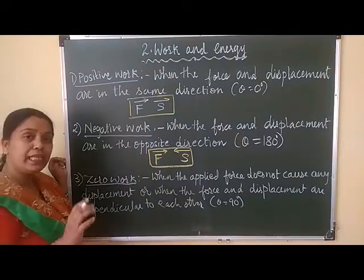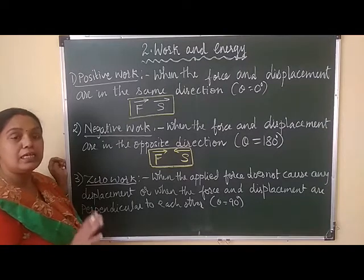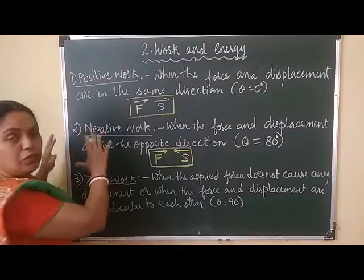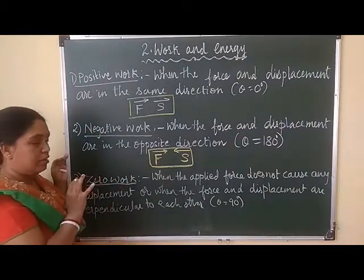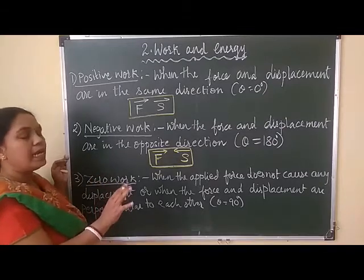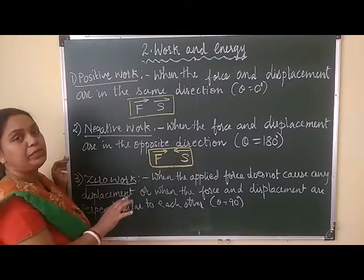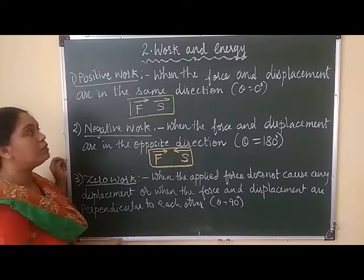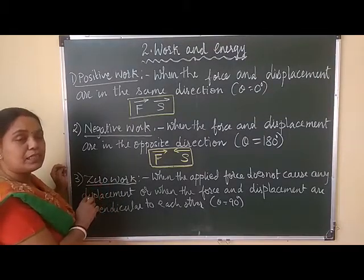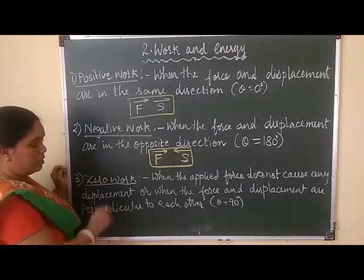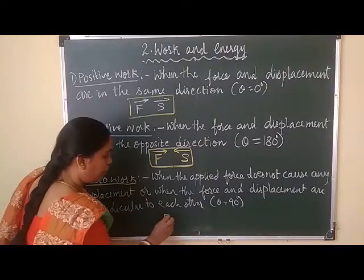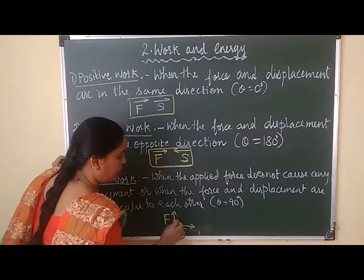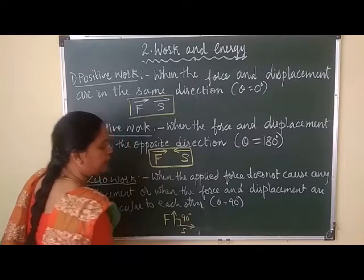Zero work: when the applied force does not make any displacement — suppose I am pushing a wall, there is no displacement — or when the force and displacement are perpendicular to each other, that is angle theta equals 90 degrees, then the applied force is doing zero work. Here, the force and displacement symbols show they are making a 90 degree angle.